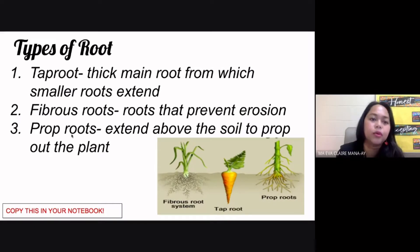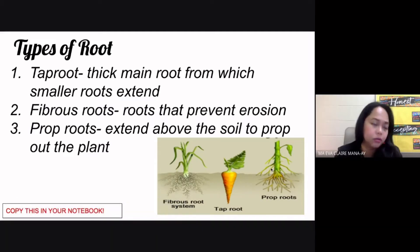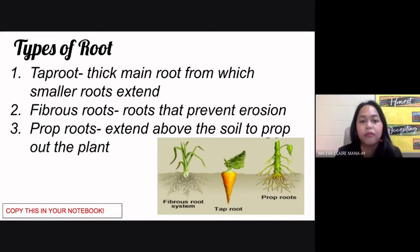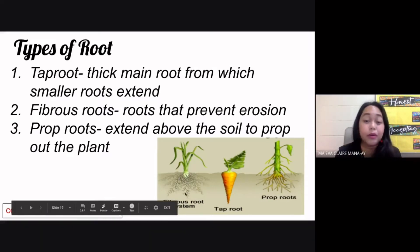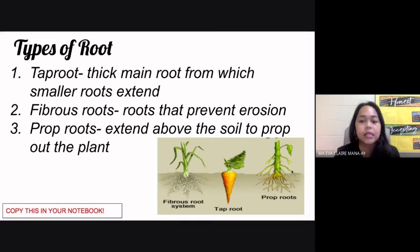The last type of root is called the prop roots. Your prop roots extend above the soil to prop out the plant. As you can see, they are seen above the ground because their function is to prop out — that means to support — the plant. So these are the three types of root: tap root system with a thick main root and smaller roots extending from it; fibrous root system with no tap root but prevents erosion; and prop roots that extend above the ground to support your plant.